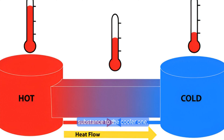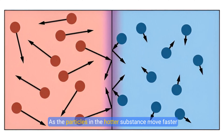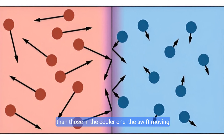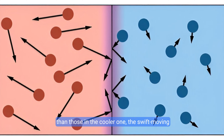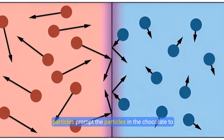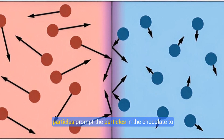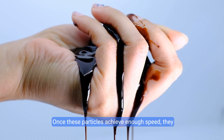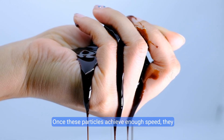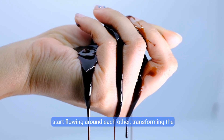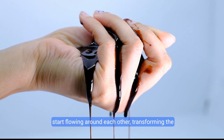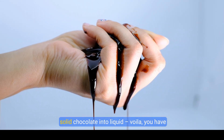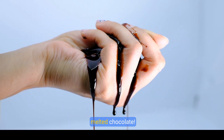This heat energy invariably flows from the hotter substance to the cooler one. As the particles in the hotter substance move faster than those in the cooler one, the swift-moving particles prompt the particles in the chocolate to speed up. Once these particles achieve enough speed, they start flowing around each other, transforming the solid chocolate into liquid — voila, you have melted chocolate!